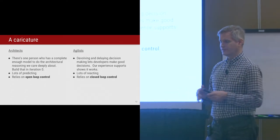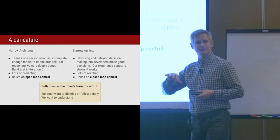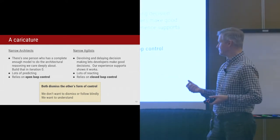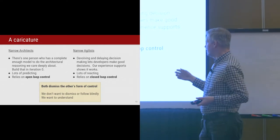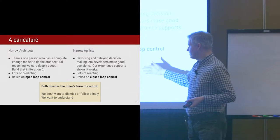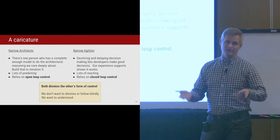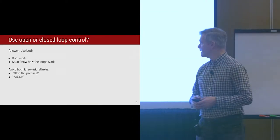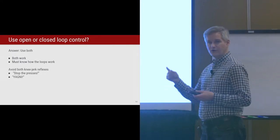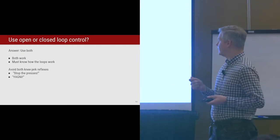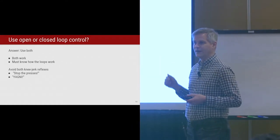Both sides tend to dismiss the kind of control the other is comfortable using. The purpose of this talk is to deconstruct what's going on, to shed light on what I think the factors are. I don't think any of us want to dismiss one side or the other - we want to understand, not just say 'this famous person says this process works great and their experience bears it out.' I'd really like to understand what's going on. The question is: should we use open loop or closed loop control? And the answer is you've got to use both. We're going to be in better shape if we understand where we're using each kind of control, and we want to avoid the knee-jerk reflexes.